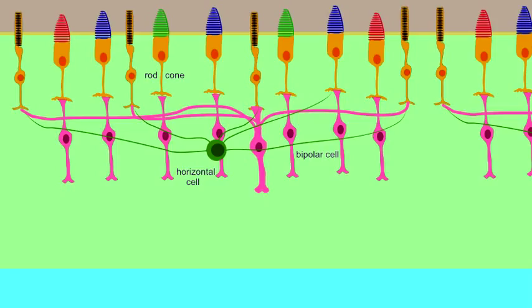Note that bipolar neurons and horizontal cells can synapse with a large number of rods, while a bipolar neuron may synapse with only one cone.